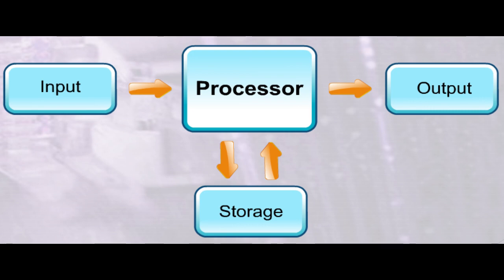Now we'll show the information processing cycle diagram: input, then process it by the processor, then we get output, and we store it for future use in a storage medium.